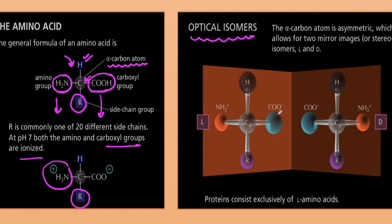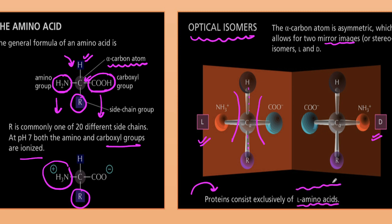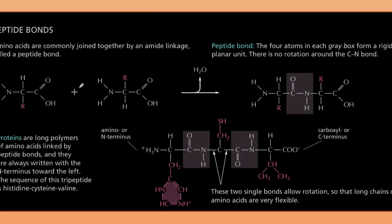Optical isomers — the alpha carbon is asymmetric, meaning if you cut through it, both sides are not similar. This makes the alpha carbon asymmetric and gives rise to two mirror images — the L form and the D form. The most important point here is that proteins exclusively consist of L amino acids. When amino acids join together via amide linkage — the C-O-N-H bond — this forms the peptide bond.